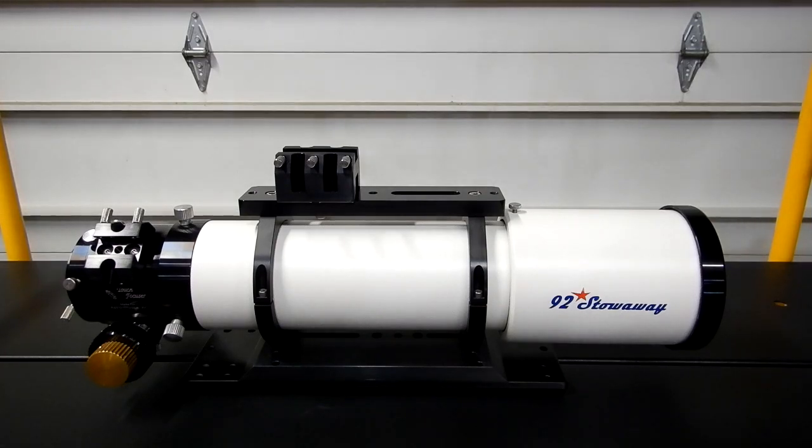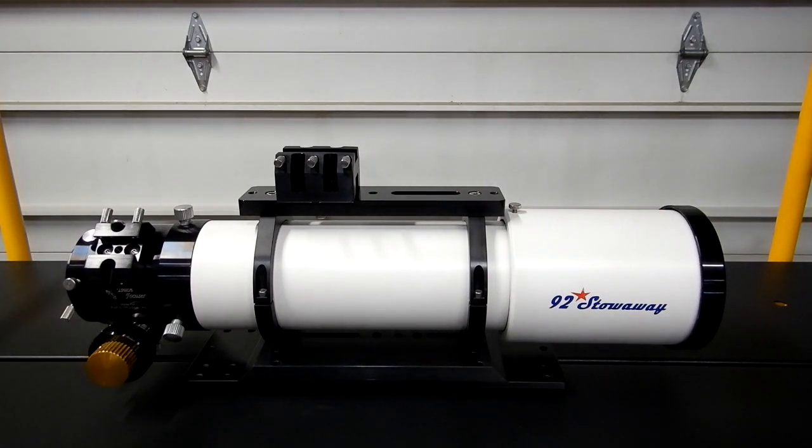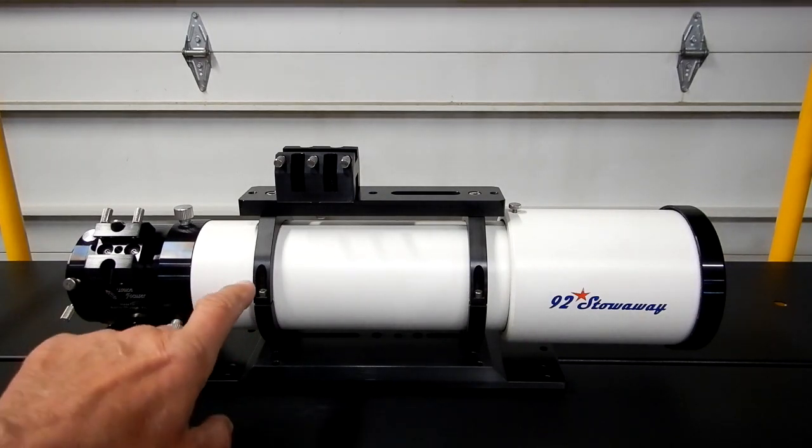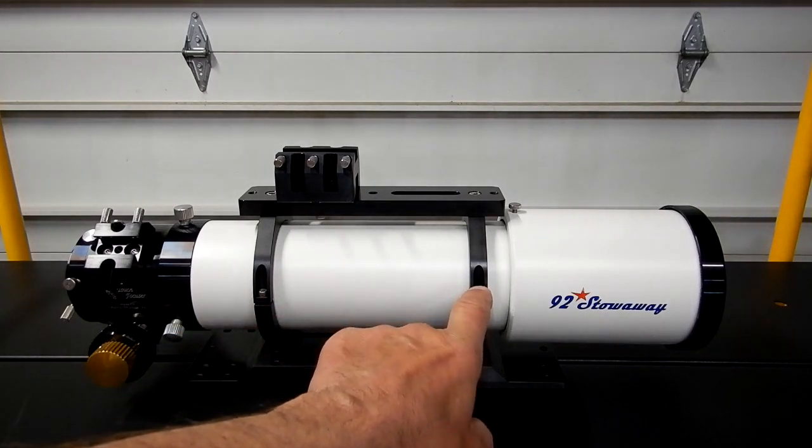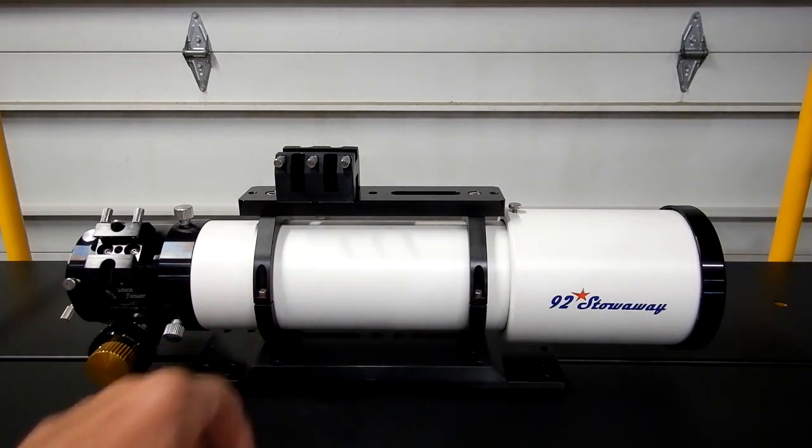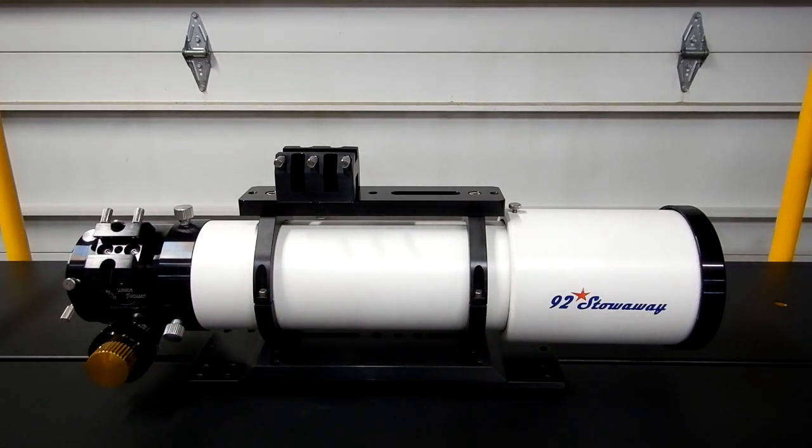Okay guys, this is my 92 millimeter Stowaway refractor from Astrophysics. I just received this less than two weeks ago and I've been getting it suited to my liking. I've already done a video on getting rid of those locking knobs and replacing those. The next thing on the agenda was some type of carrying handle.